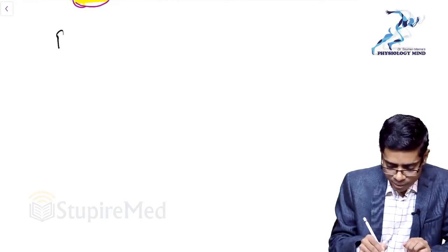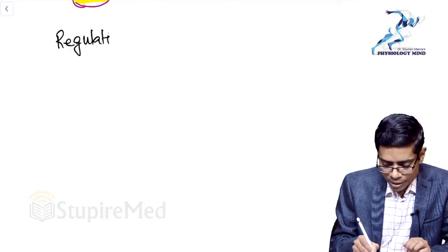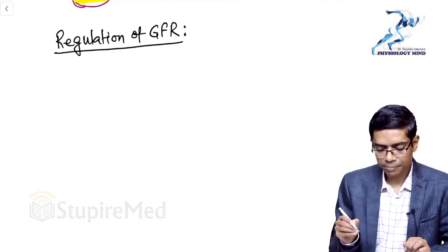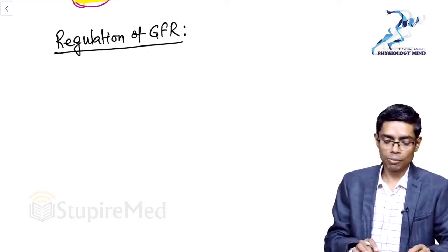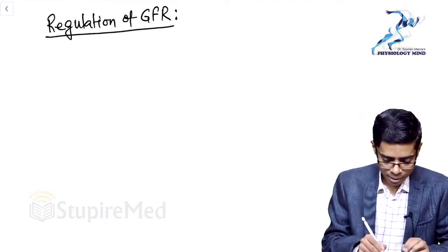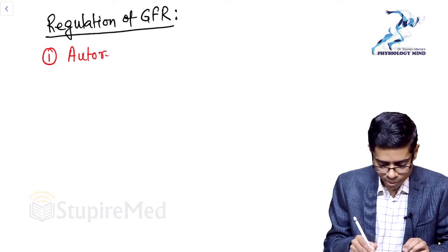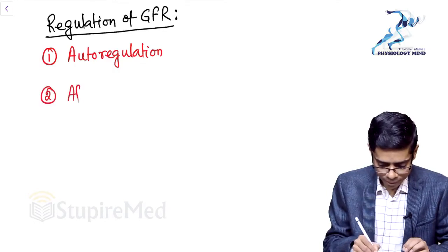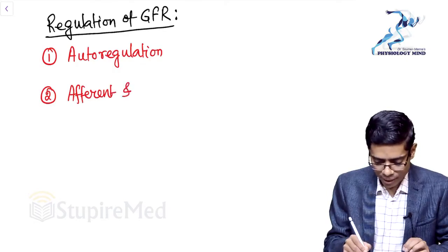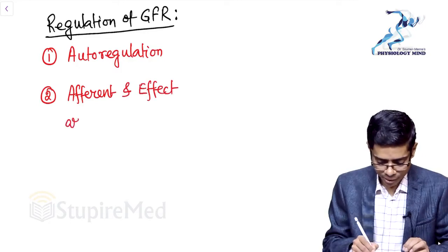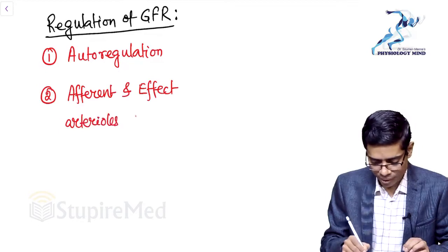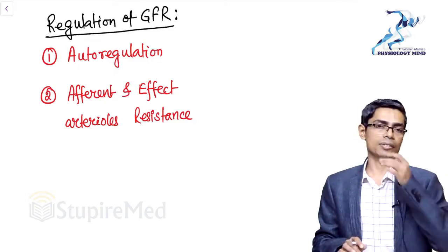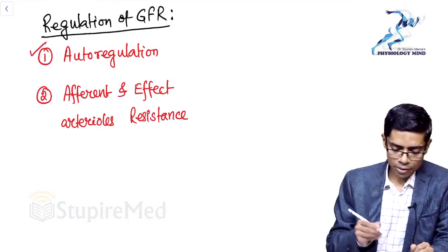Now we discuss regulation of GFR. Two important factors regulate GFR: number one is autoregulation, and number two is afferent and efferent arteriolar resistance. We will discuss autoregulation first and then move to arteriolar resistance.